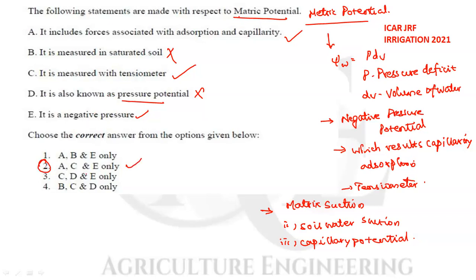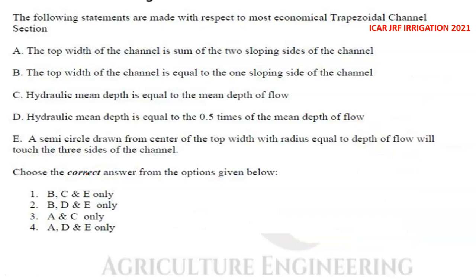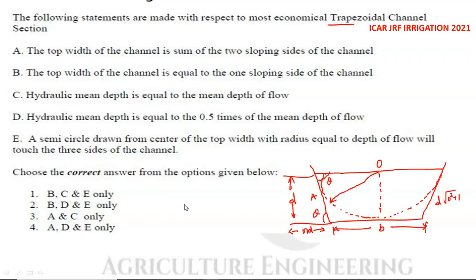The next question gives a list of statements made with respect to the most economical trapezoidal channel. We need to find the correct statements. When a channel is said to be most efficient, there are three criteria to be followed.